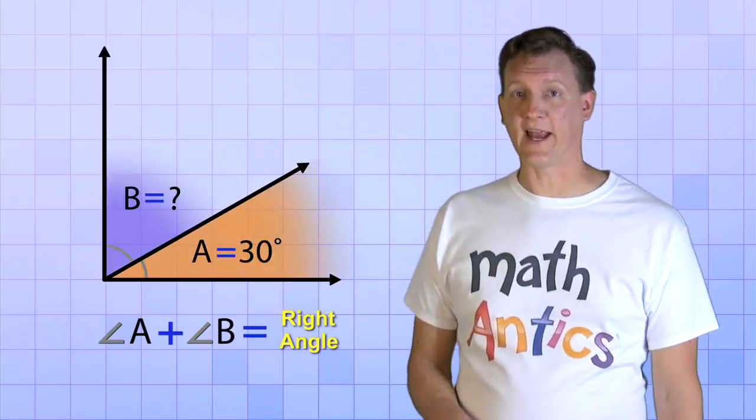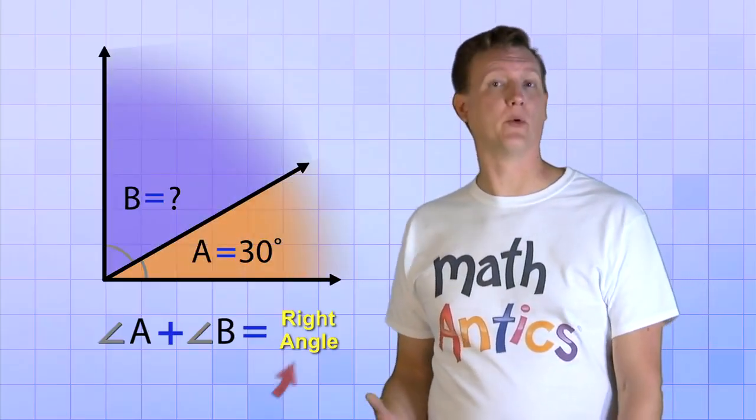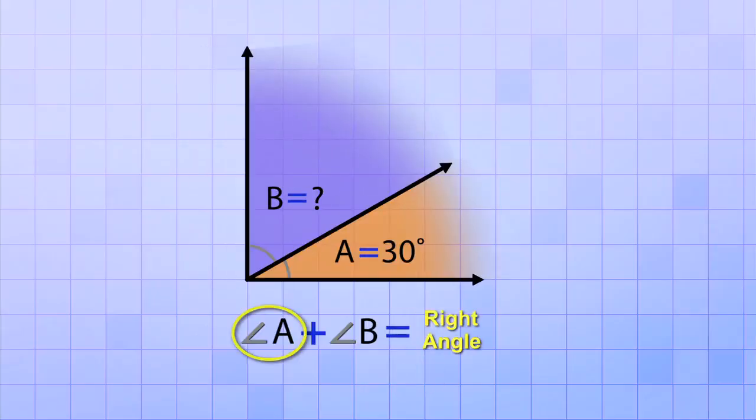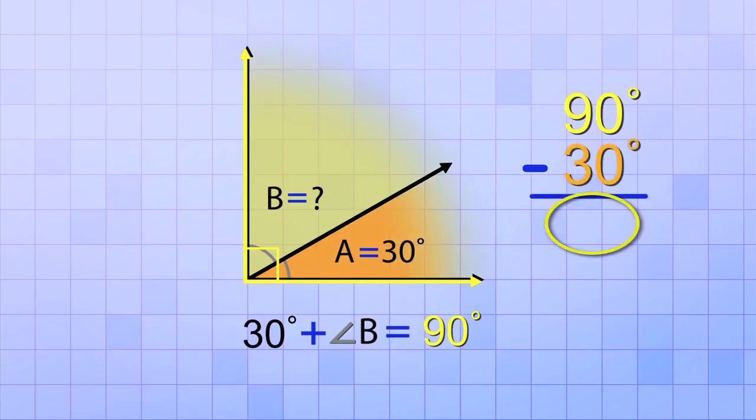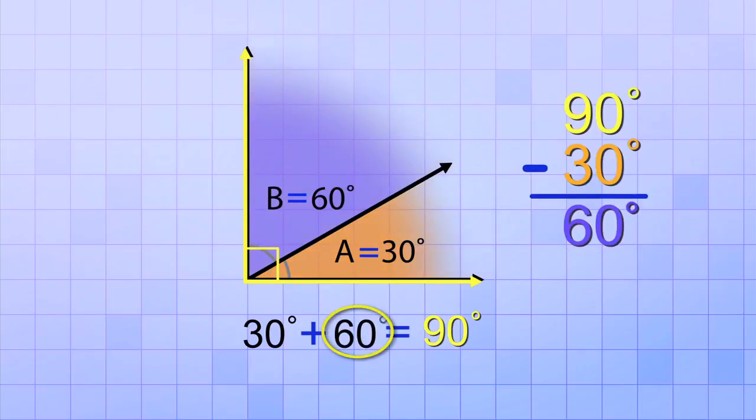It shows two angles, angle A and angle B, that combine to form a right angle. The problem tells us that angle A is 30 degrees and it wants us to figure out what angle B is. Fortunately, it's easy to figure that out now because we know that a right angle is 90 degrees, so we know what the total of both angles must be. That means that to find angle B, all we have to do is take the total, which is 90 degrees, and subtract angle A, which is 30 degrees. And whatever is left over will be the measurement of angle B. So 90 minus 30 equals 60. So angle B is 60 degrees.